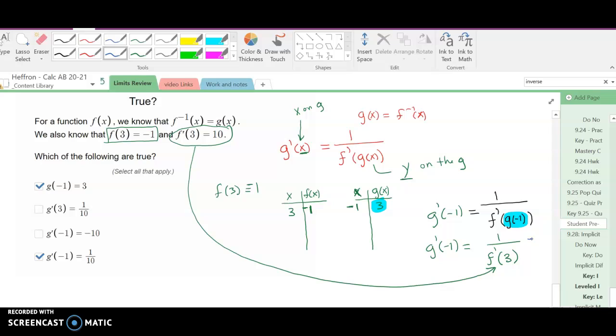Turns out they gave us that f prime of three is really ten. So that means our answer is one over ten. Again, that's why that one was true. And this table demonstrates why that is true.